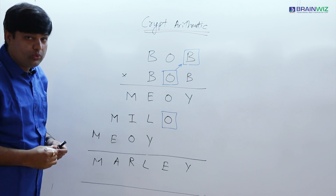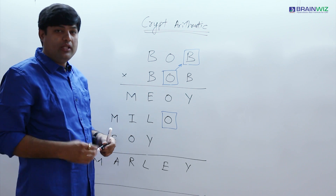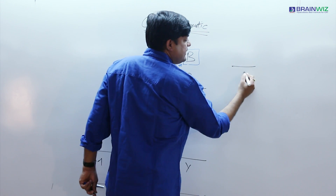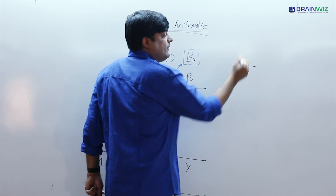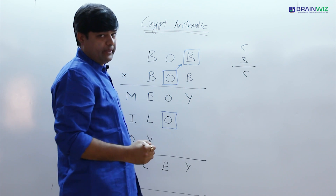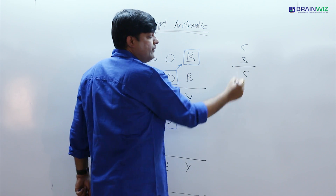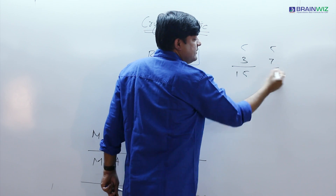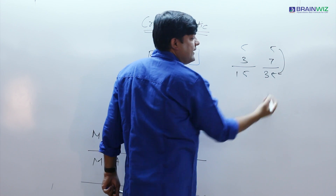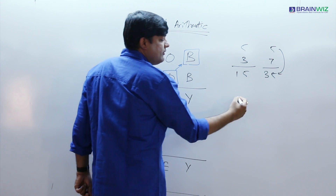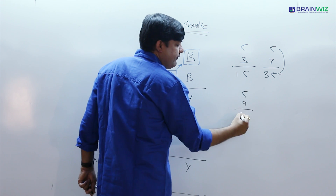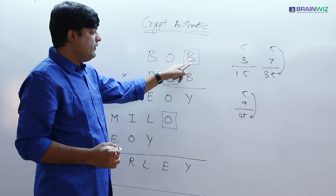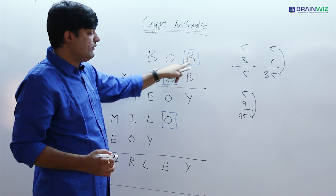We have a basic rule in multiplication: when you want the same digit back, like digit 5, if you want the 5 back, that 5 should be multiplied with 3. For example, 3 × 5 = 15, you have the same value back; or 7 × 5 = 35, same value back; or 5 × 9 = 45, you get the same 5 back. In order to have the same value back, we have to consider values in the form of 5.